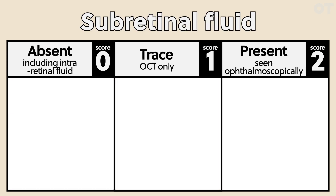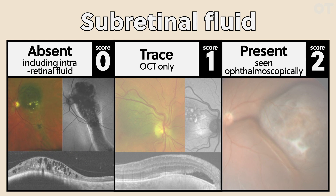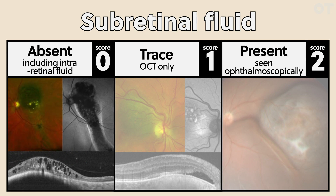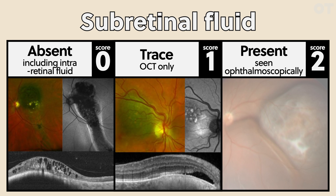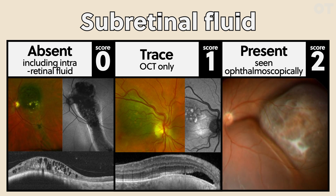Finally, we look at subretinal fluid. If there's no subretinal fluid, you give it a score of zero. Intraretinal fluid — the cystic spaces in the retina — does not count as subretinal fluid; it has to be underneath the retina as seen on OCT. If you can only see the subretinal fluid on OCT, you give it a score of one. But if you can obviously see the subretinal fluid ophthalmoscopically, then you give it a score of two.